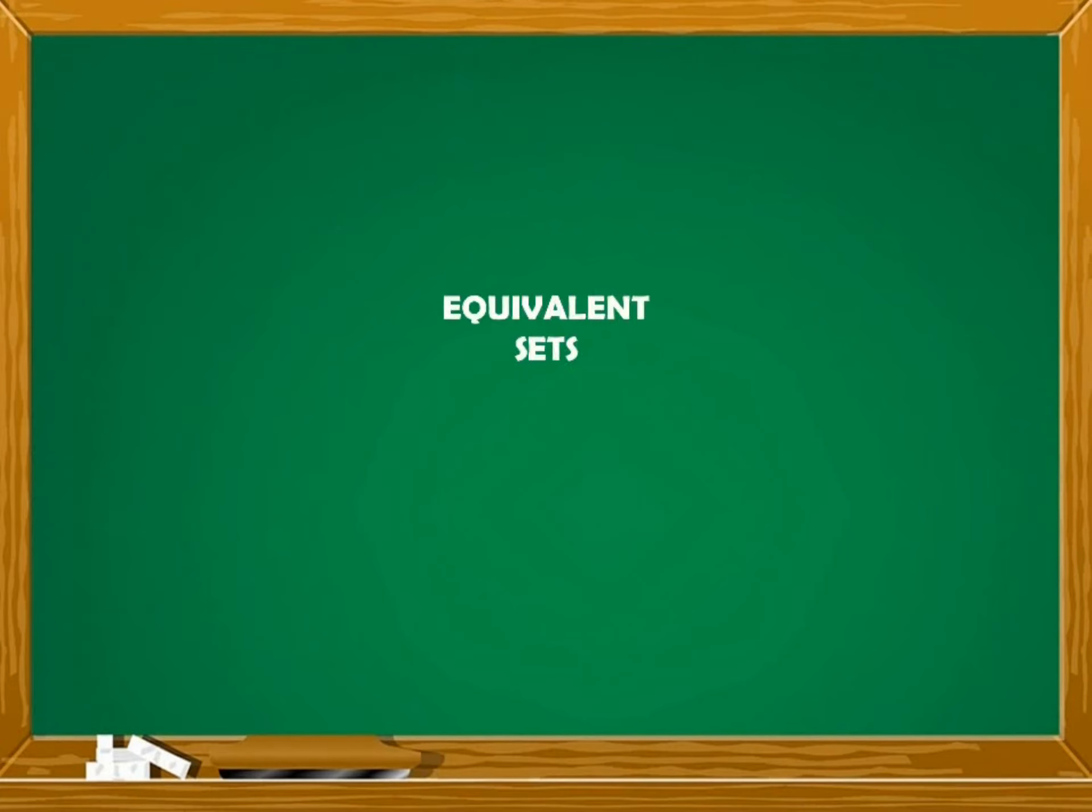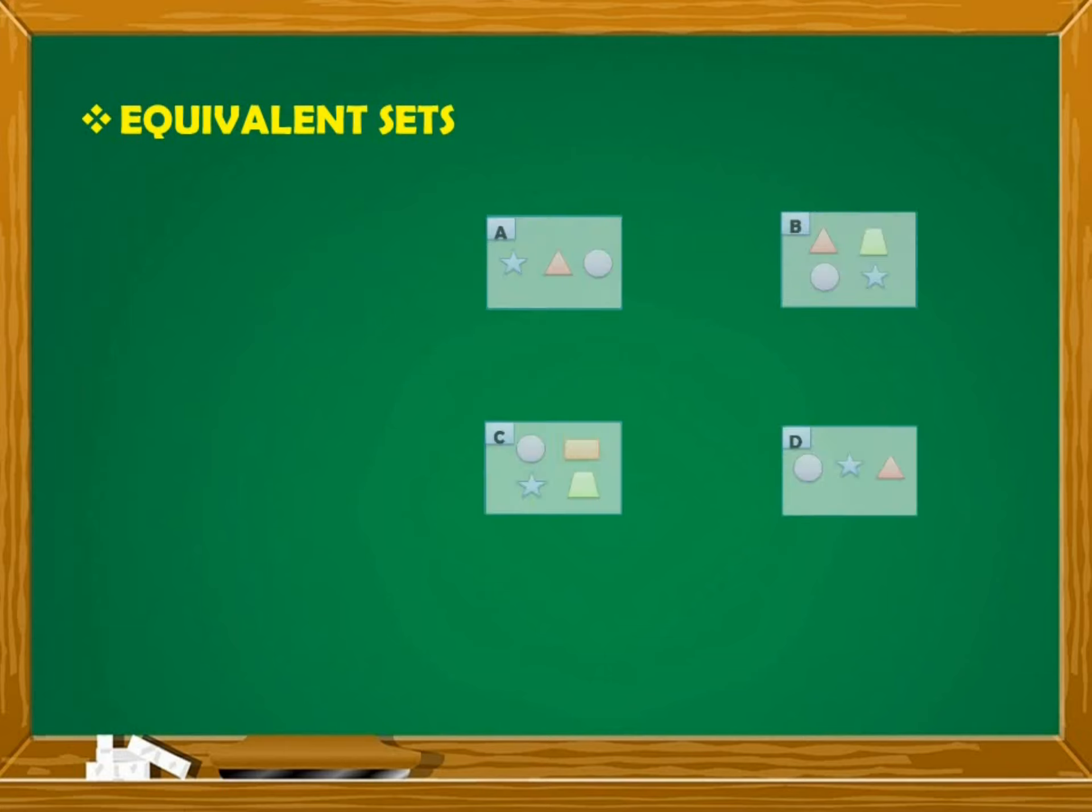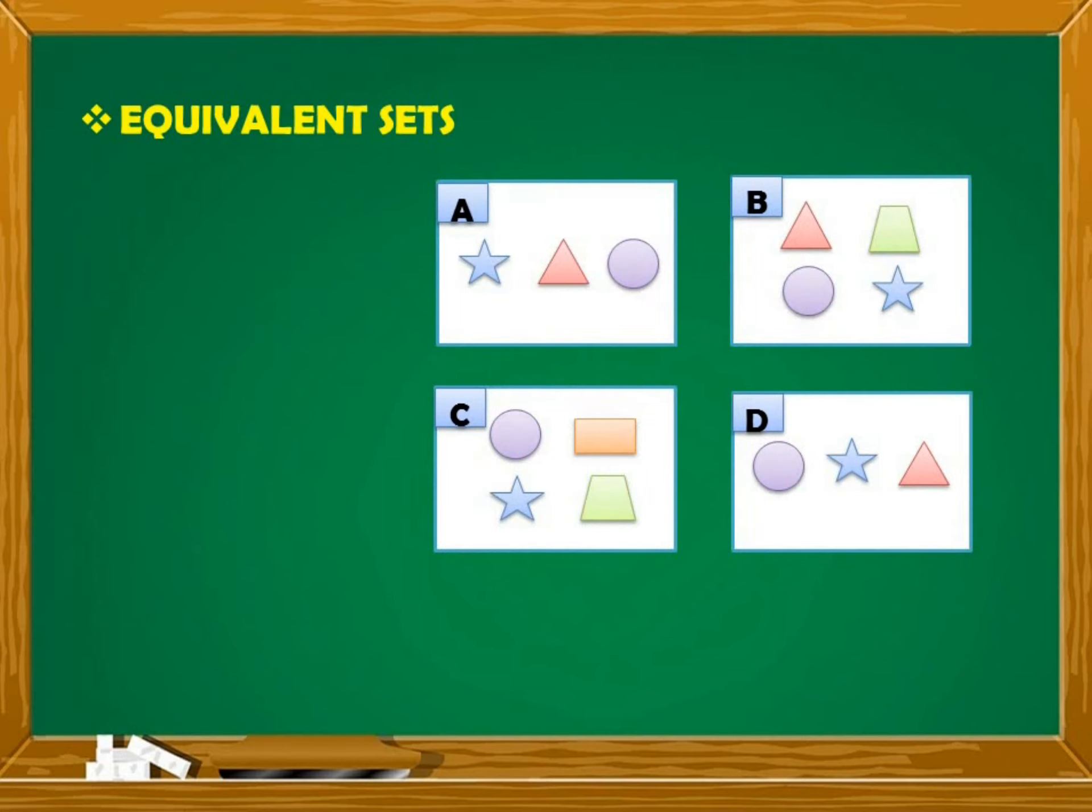Let's first discuss the equivalent sets. Again, let us use these four random sets to illustrate equivalent sets. Any two sets are equivalent if they have the same cardinal number or the number of elements, yung bilang ng elements sa bawat set. To know which of these sets are equivalent,